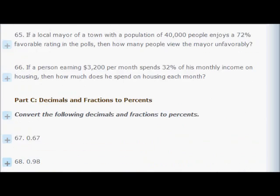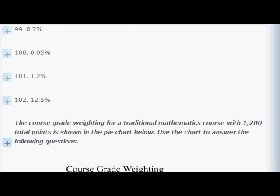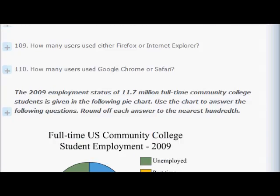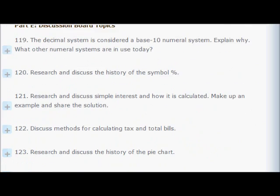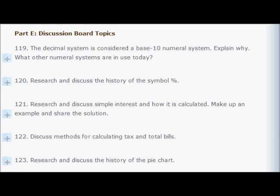Here are discussion questions. The decimal system is a base ten numeral system because we multiply by ten moving left and divide by ten moving right — similar to the metric system, where 'cent' means one one-hundredth, as in centimeters.